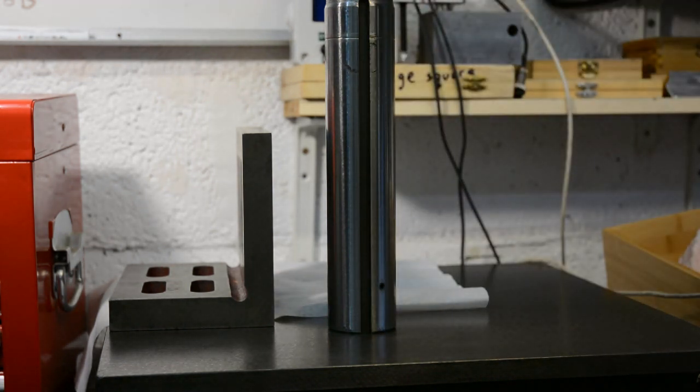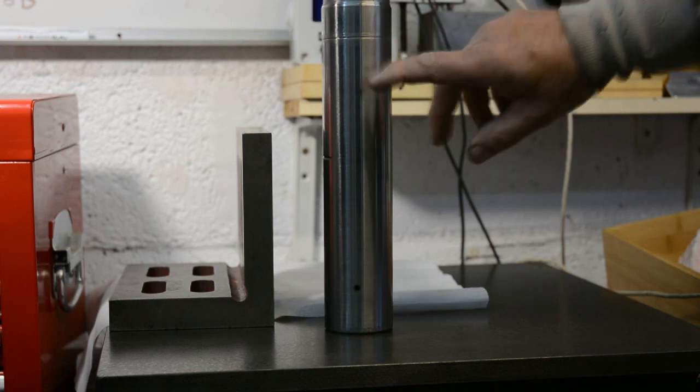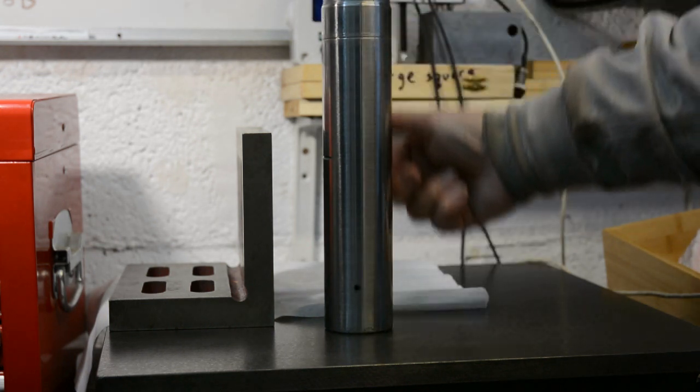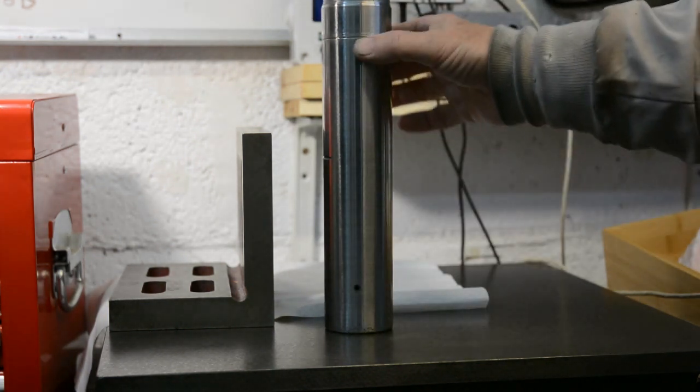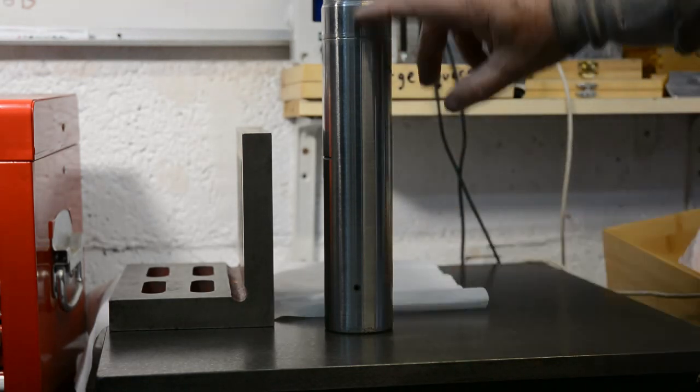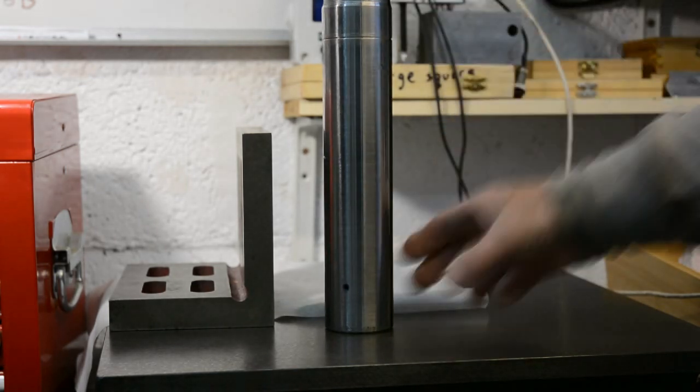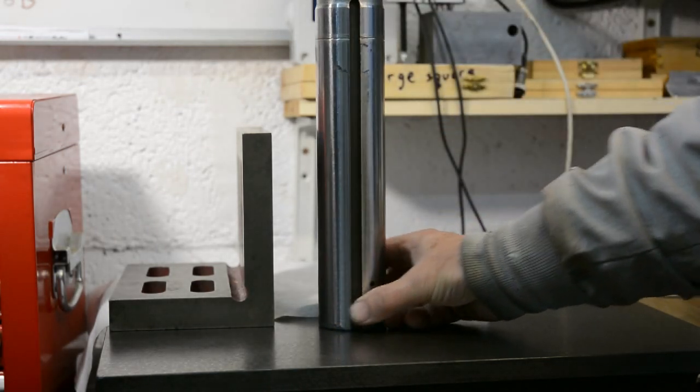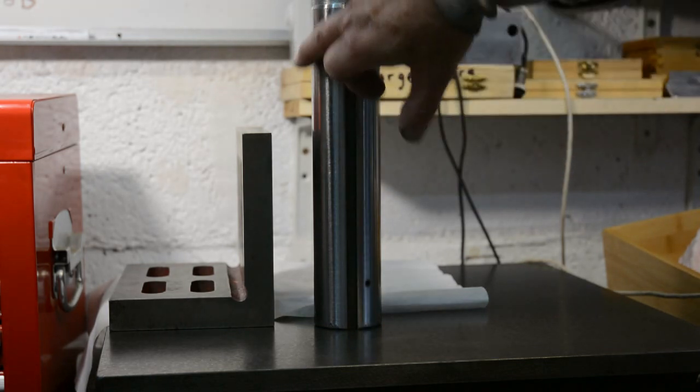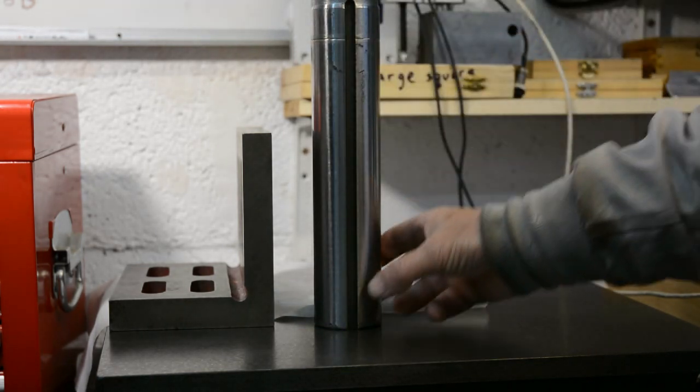But at right angles to that, this face and the face at the back, it's fine for what I want to use it for. So as long as I just use these two faces, and that's not a hardship to tell where they are because they're at right angles to this keyway. So I just need to check these two faces.